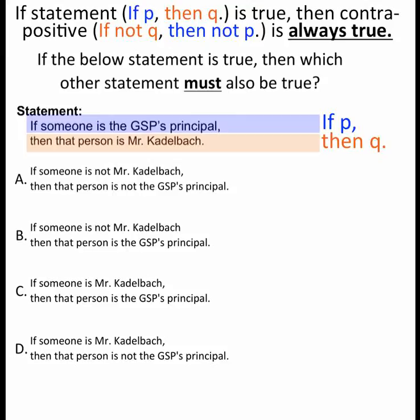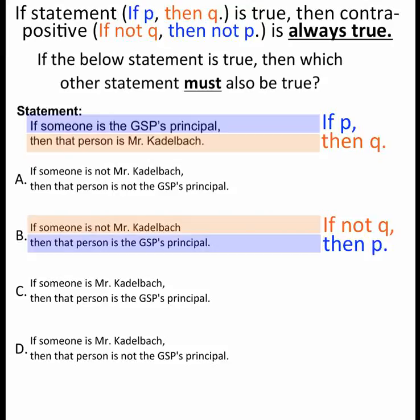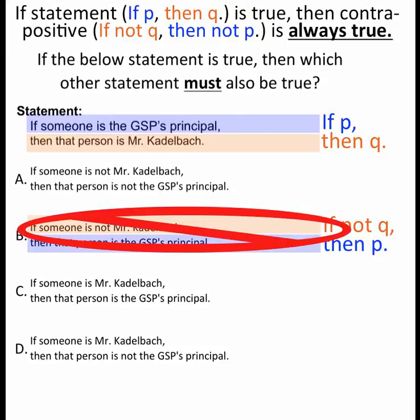Let's go through the various statements. If someone is not Mr. Kattelbach — if not Q — then that person is GSP's principal — then P. That's not if not Q then not P, so that's not the contrapositive, so no.